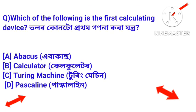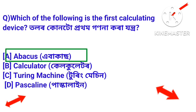Next question: which of the following is the first calculating device? Tolor kunto prathom gononakara jantro? Answer: the first calculating device is abacus. Prathom gononakara jantotur nama hol abacus jantro.